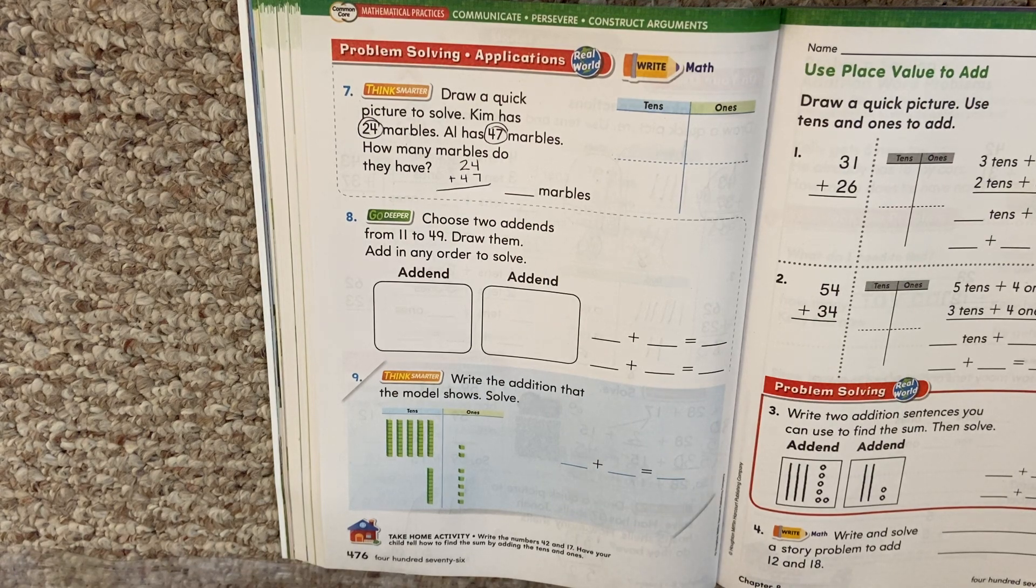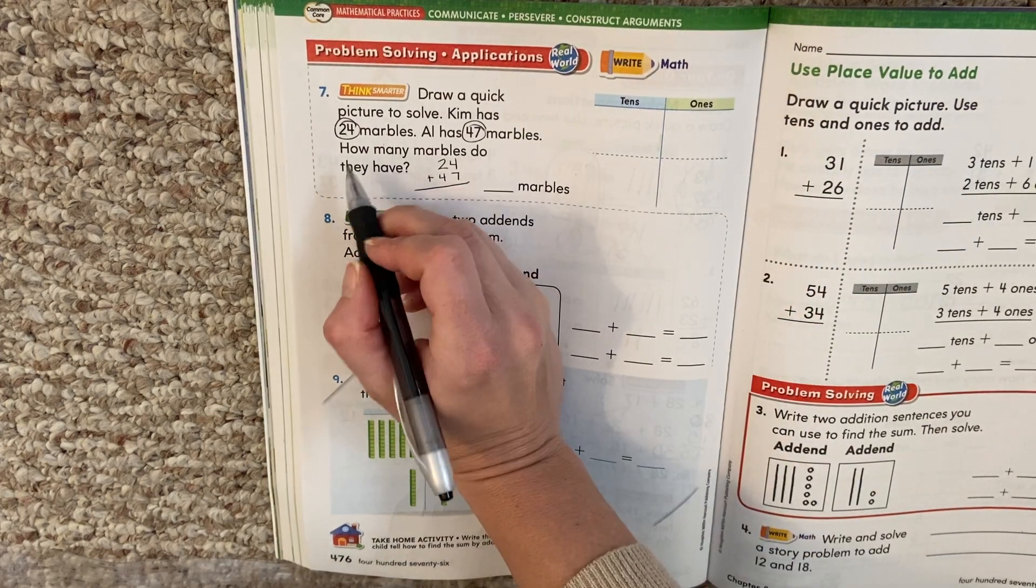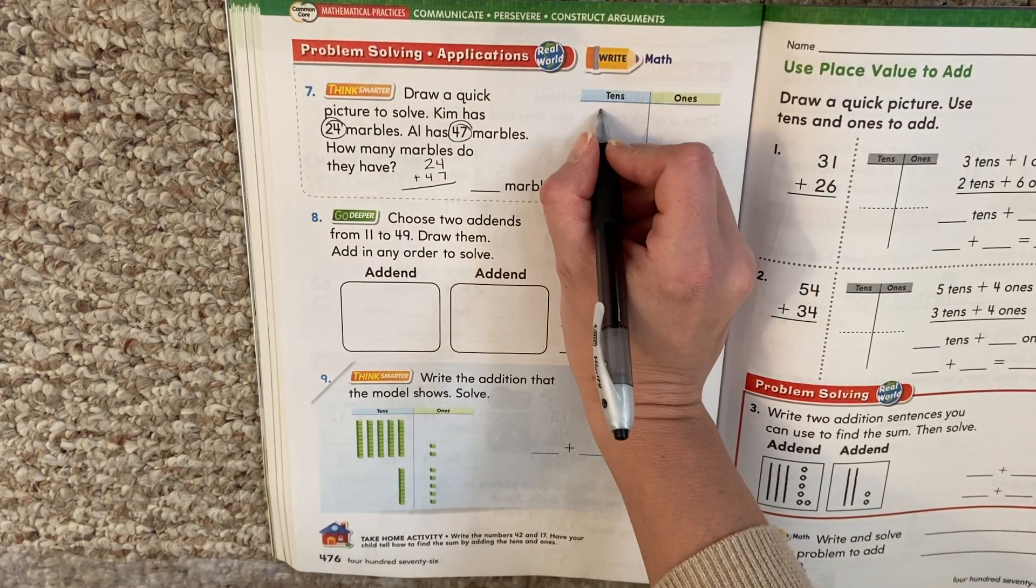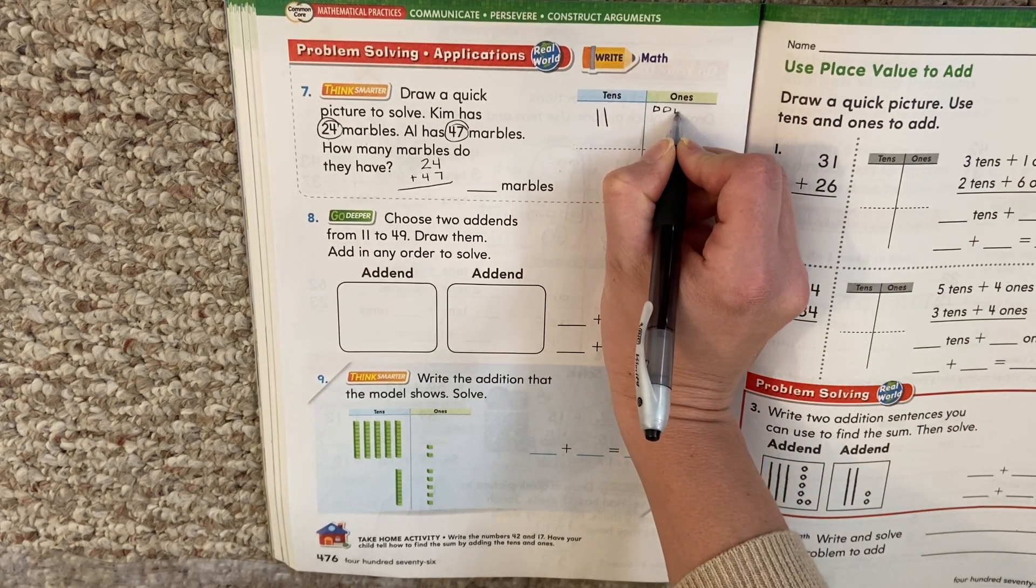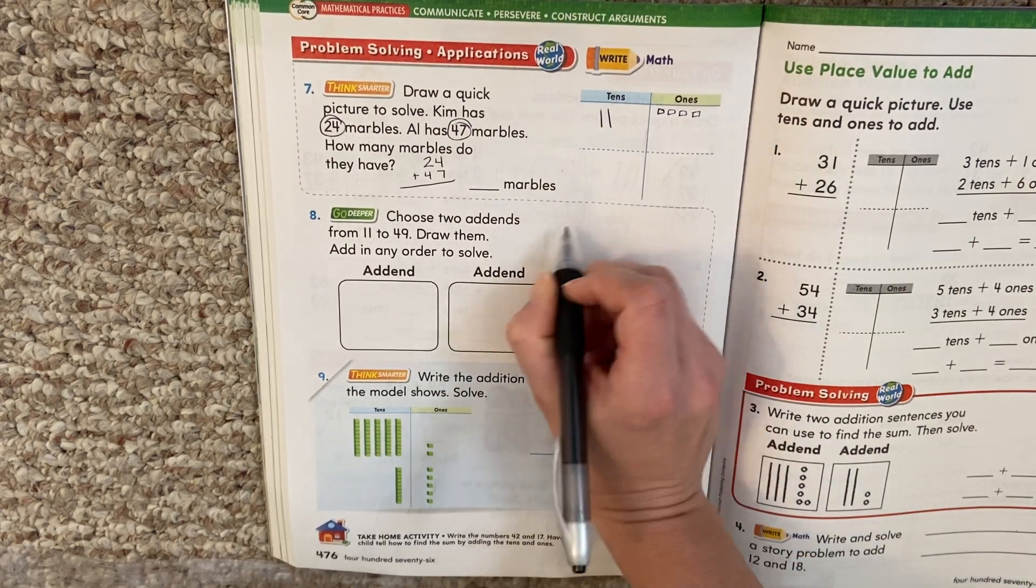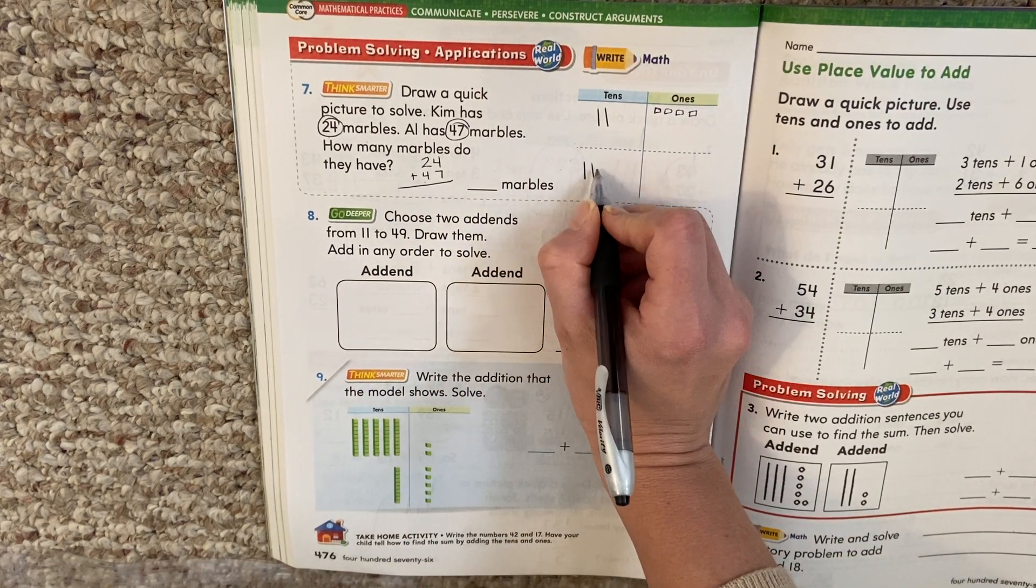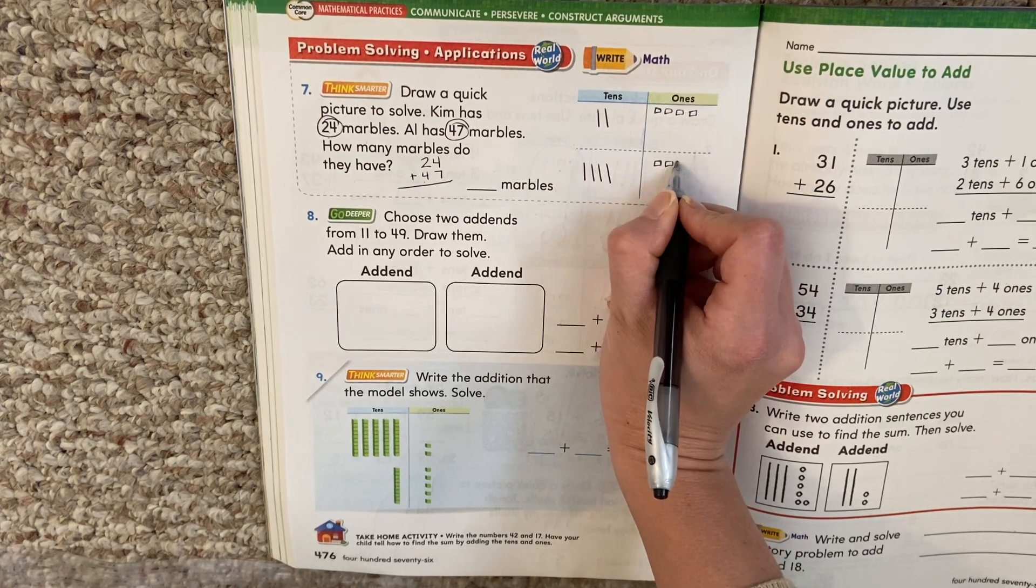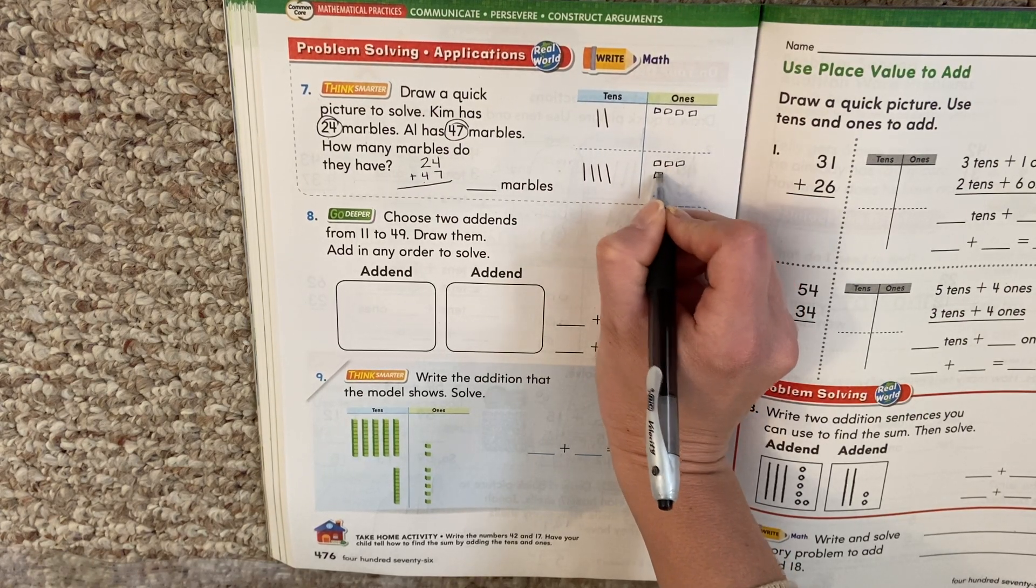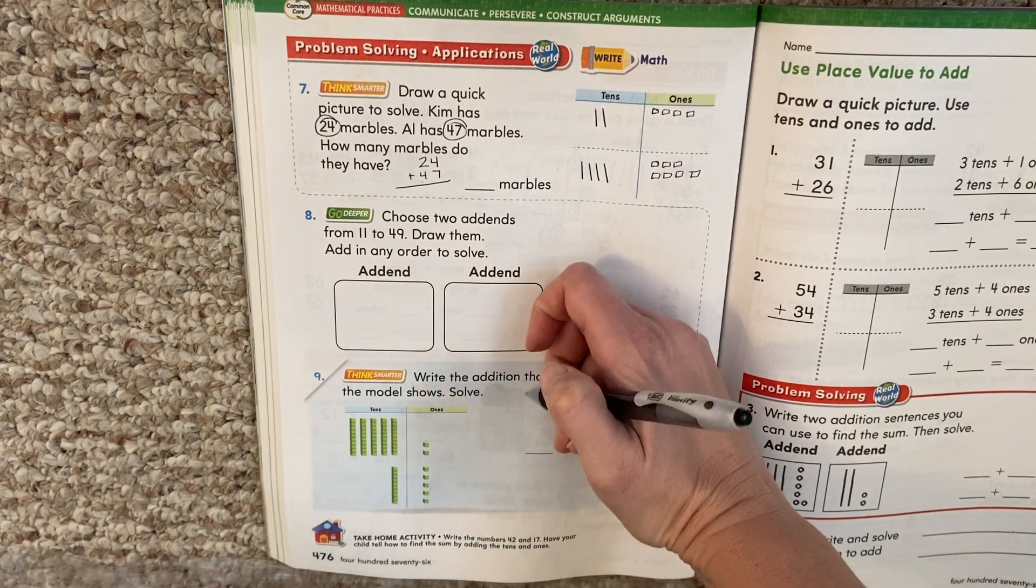Then we want to draw it out. So 24. Two tens. Four ones. 47. Four tens. Seven ones.